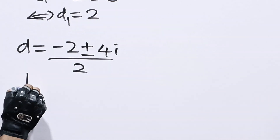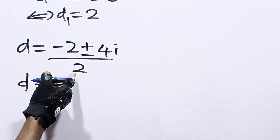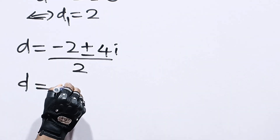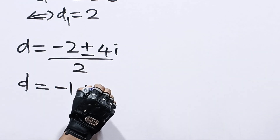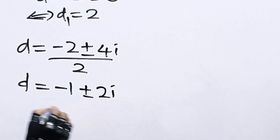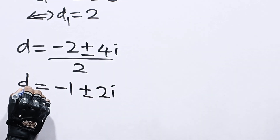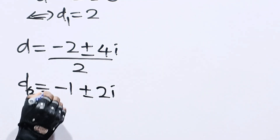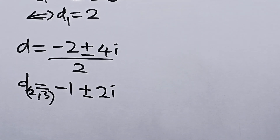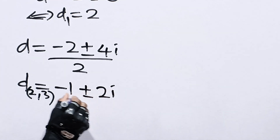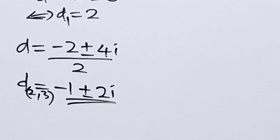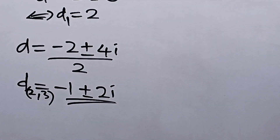The square root of negative 16 is 4i. So d equals negative 2 over 2 plus or minus 4i over 2, which simplifies to negative 1 plus or minus 2i. These are d2 and d3. So the final answers are: d1 equals 2, and d2 and d3 equal negative 1 plus or minus 2i. Thanks for watching.